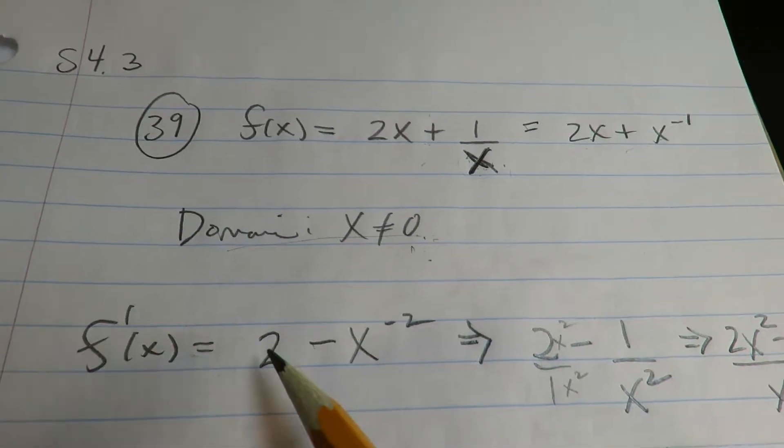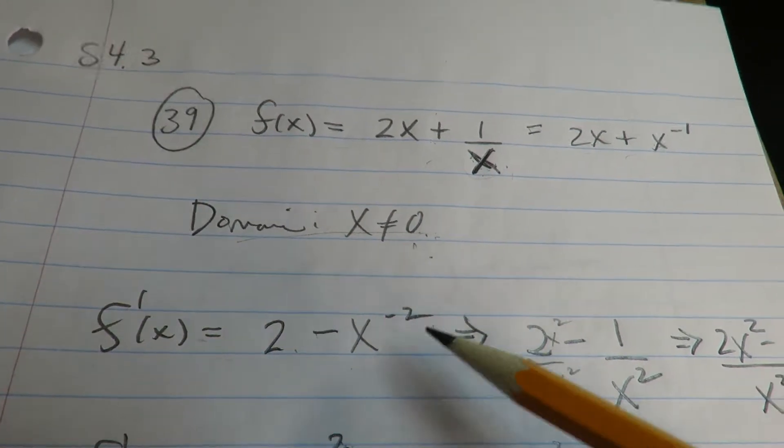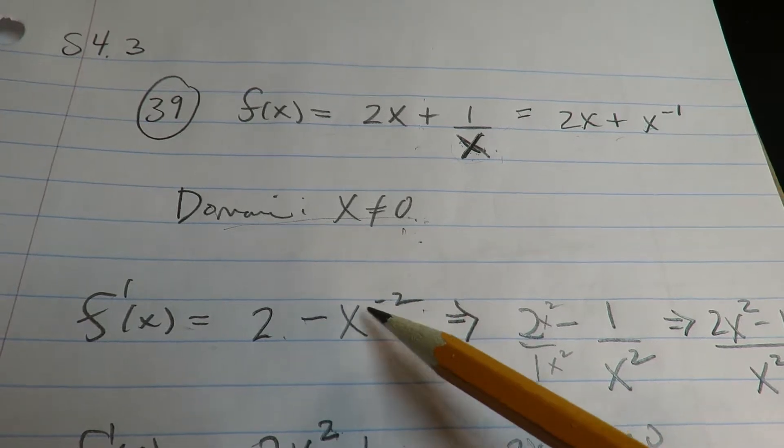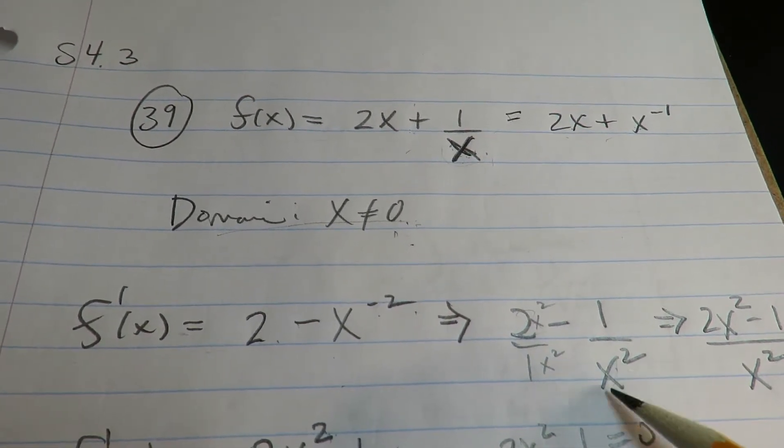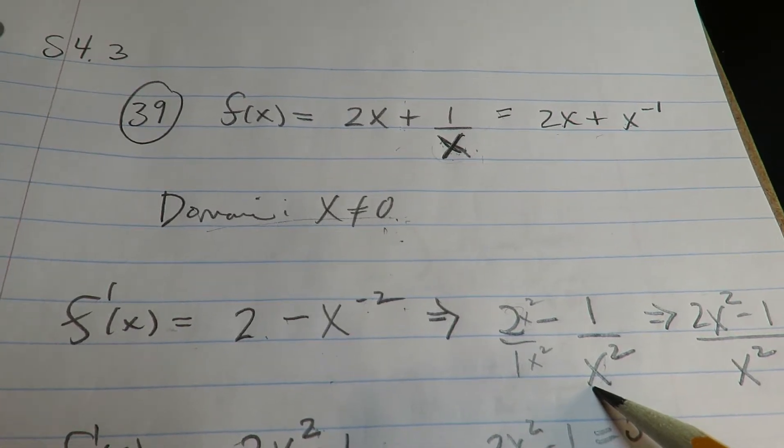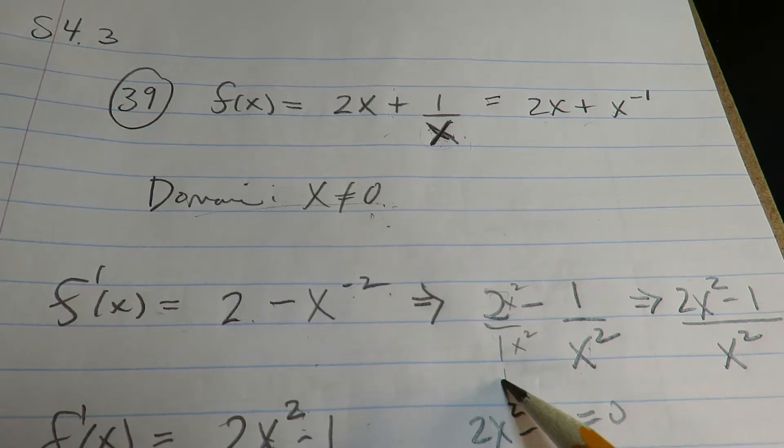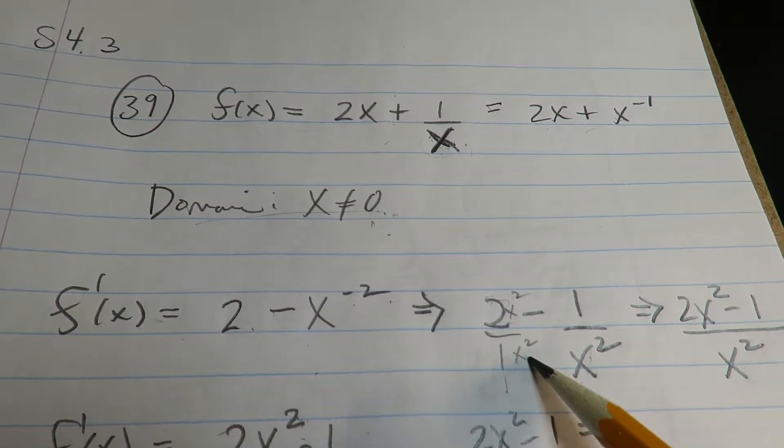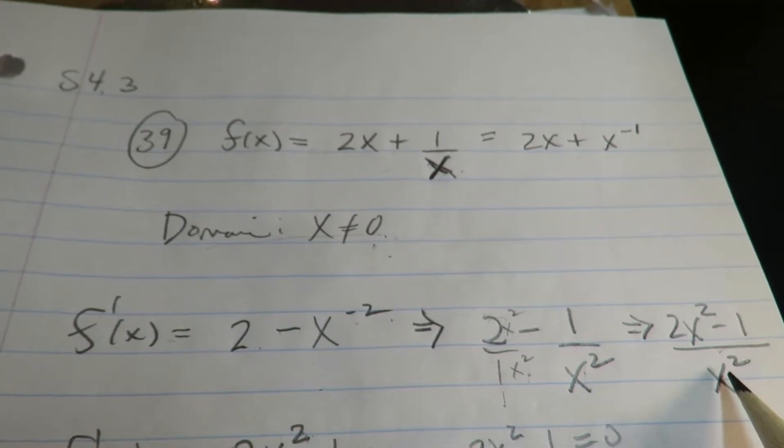Down here I'm doing the derivative. So derivative of this is two, derivative of this part is negative x to negative two. I then took this because it's negative and I flipped it down. So I did two minus one over x squared. The next thing I did was I got an LCD. So this two, I put it as two over one and I multiplied up down by x squared so that I can get this.